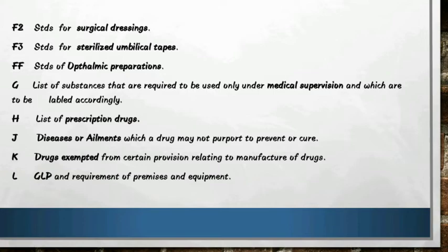Schedule J to the rules covers diseases or ailments which a drug may not purport to prevent or cure. Schedule K to the rules covers drugs exempted from certain provisions relating to manufacture of drugs. Schedule L to the rules covers GLP — Good Laboratory Practice — and the requirements of premises and equipment.